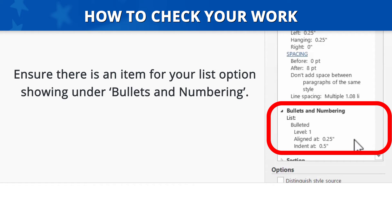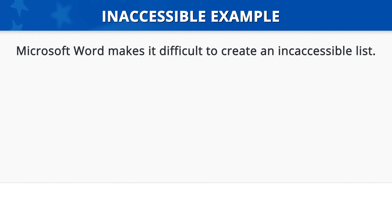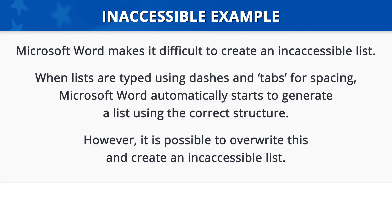Once the pane is open, ensure that there is an item for your list option showing under Bullets and Numbering. In this example, there is a numbered list with one level listed under Bullets and Numbering. Microsoft Word makes it difficult to create an inaccessible list. If you begin typing a list using dashes and tabs for spacing, Microsoft will automatically start to generate a list using the correct structure. However, it is possible to overwrite this and create an inaccessible list.